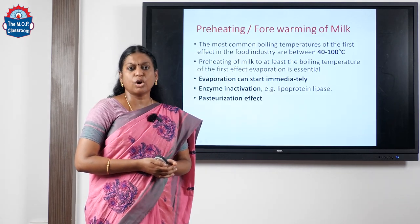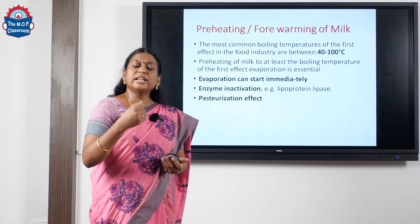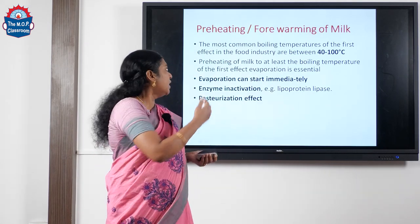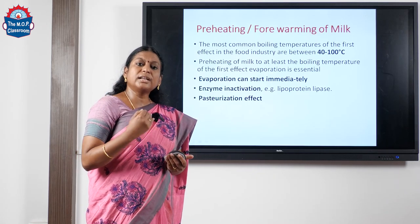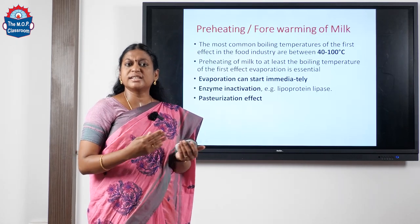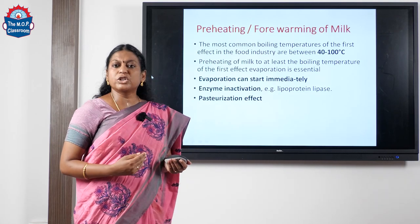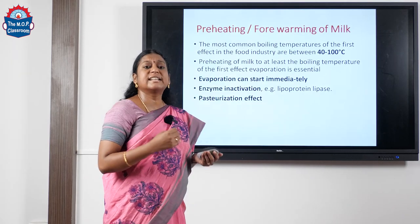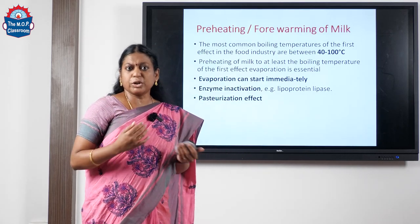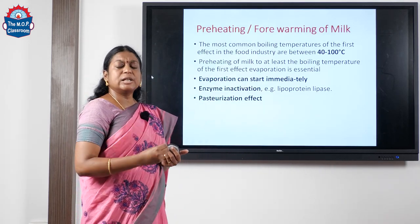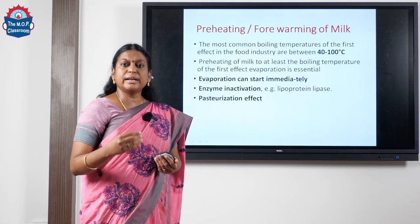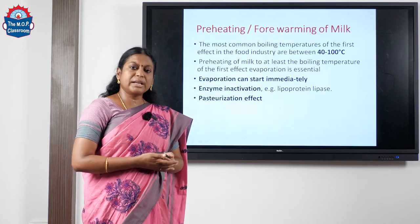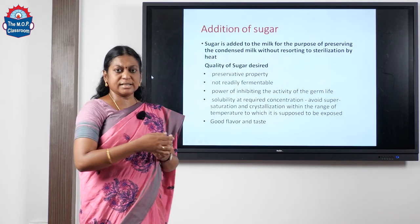Moving on to the preheating of milk: usually in evaporation the first effect of the evaporator has a temperature around 40 to 100 degrees Celsius, so preheating the milk to this temperature is important so that evaporation can start immediately. Preheating also has enzyme inactivation potential — enzymes like lipoprotein lipase get inactivated — and this also gives a pasteurization effect.